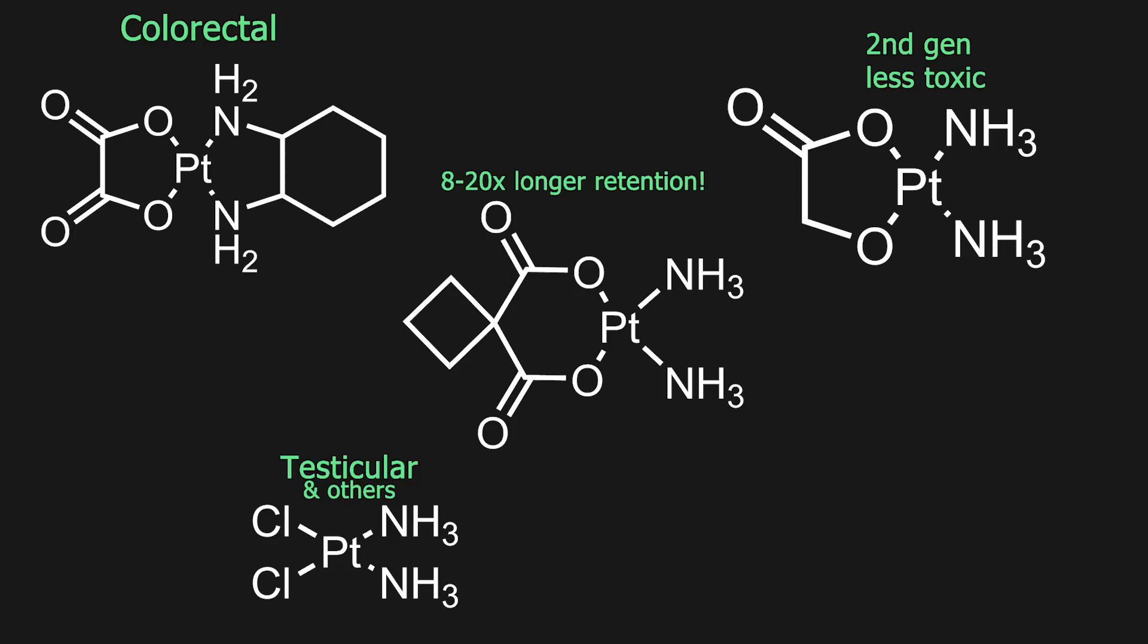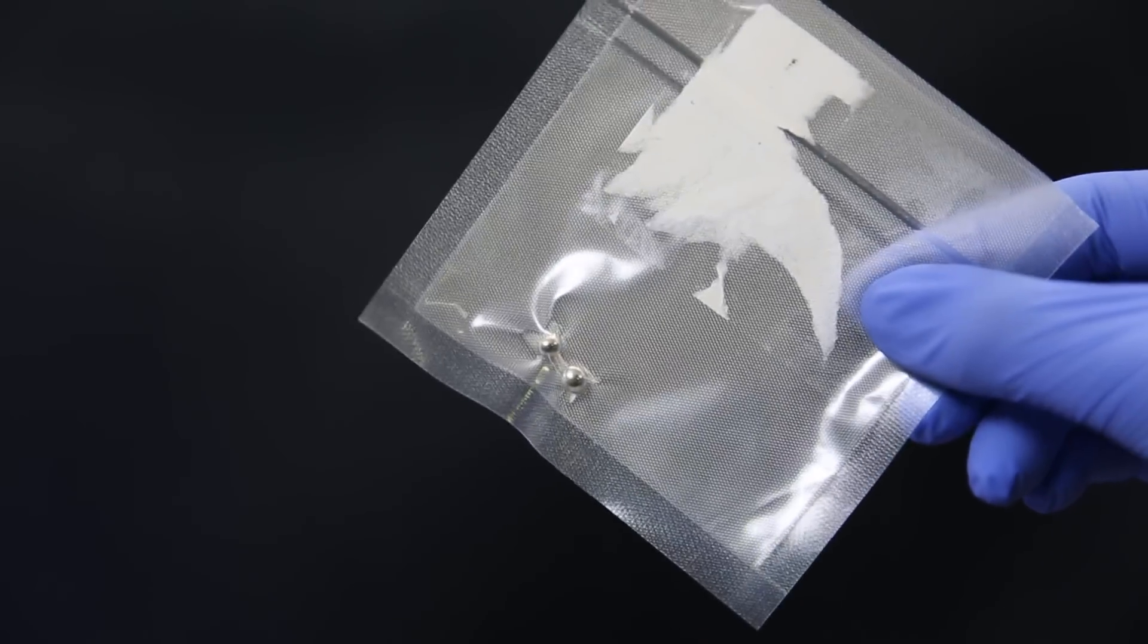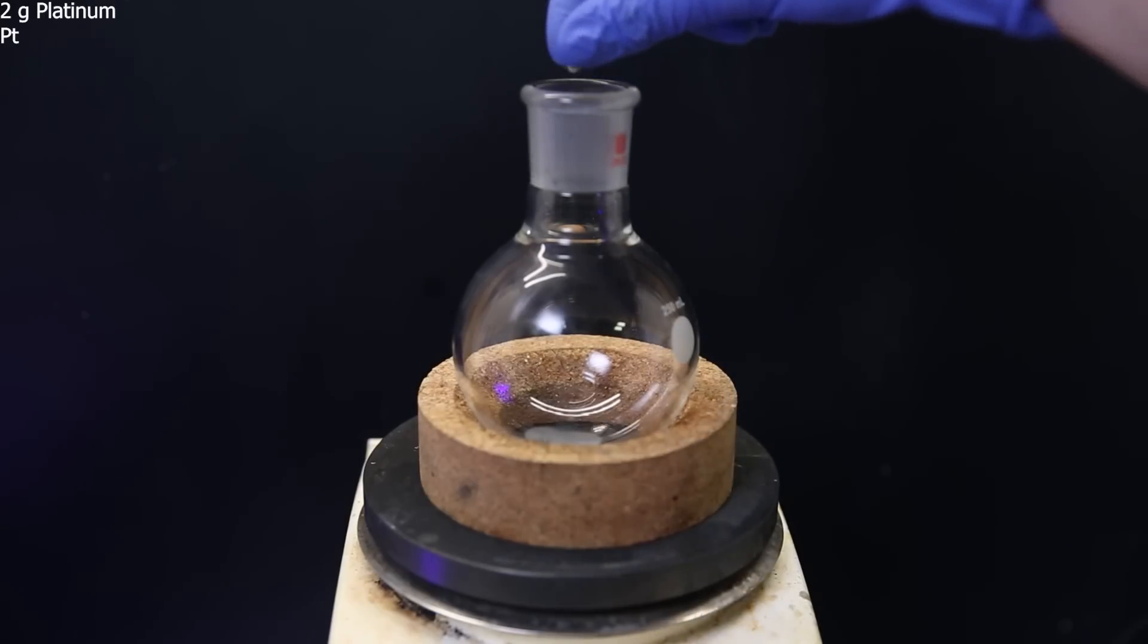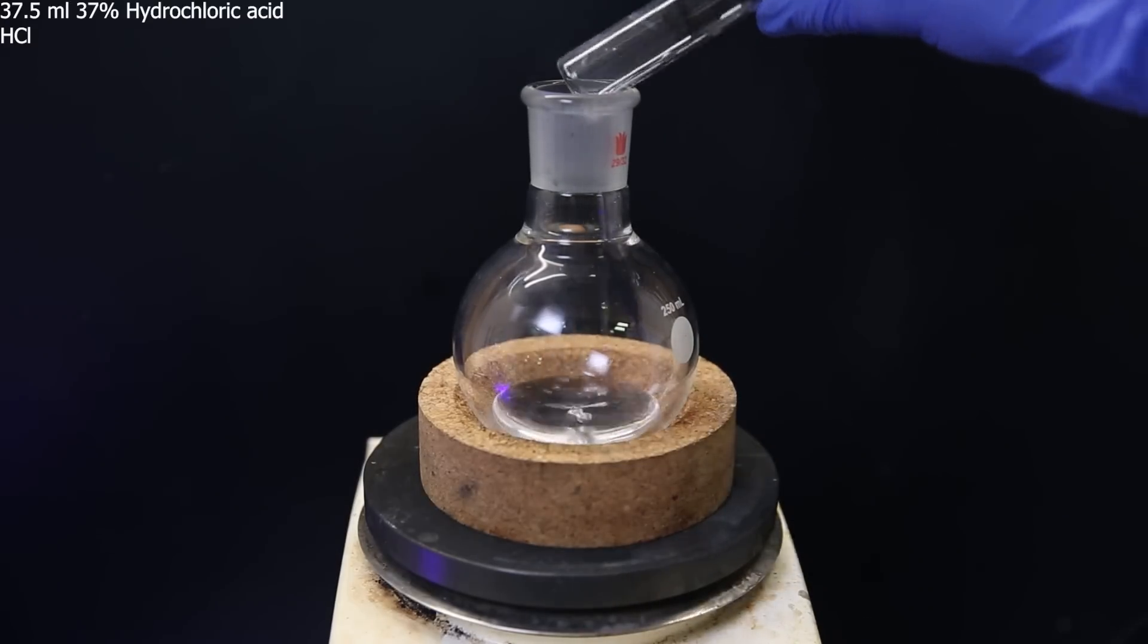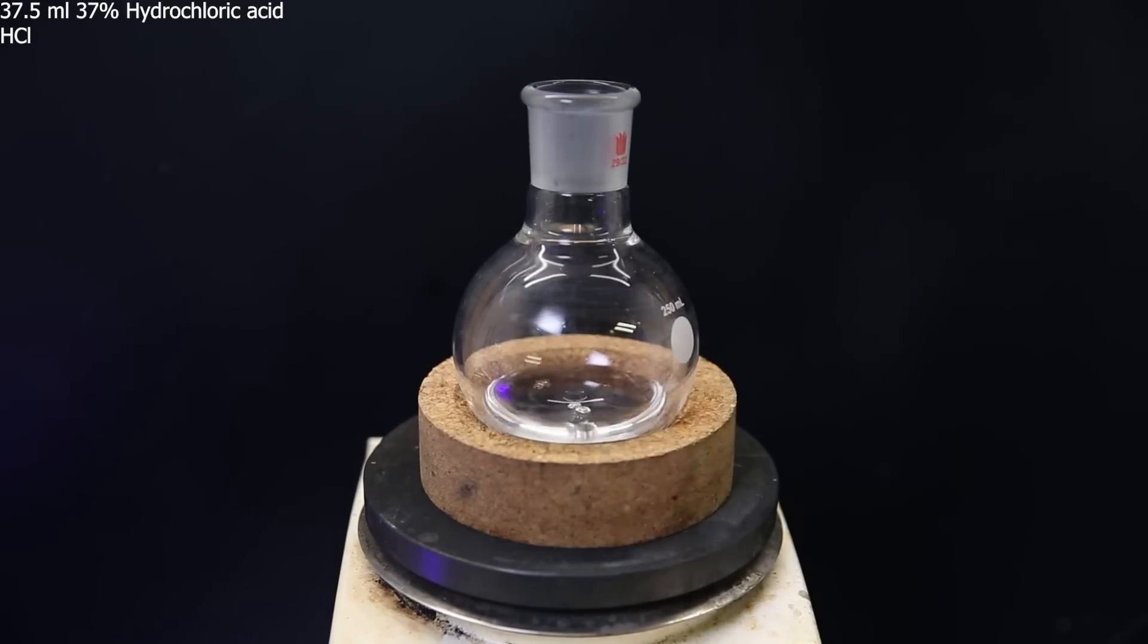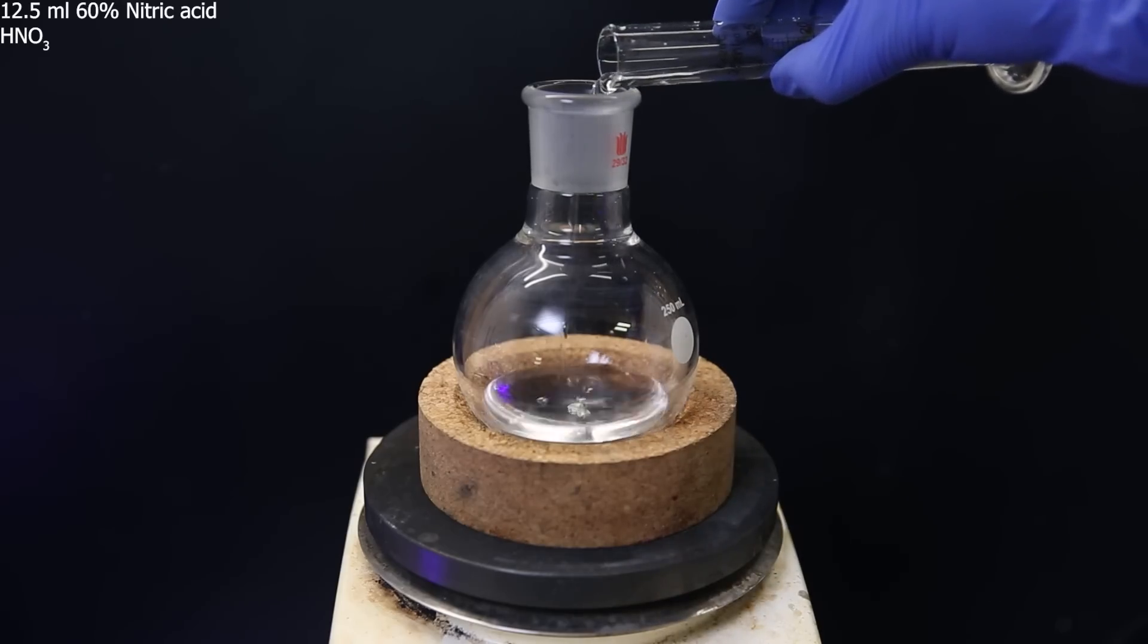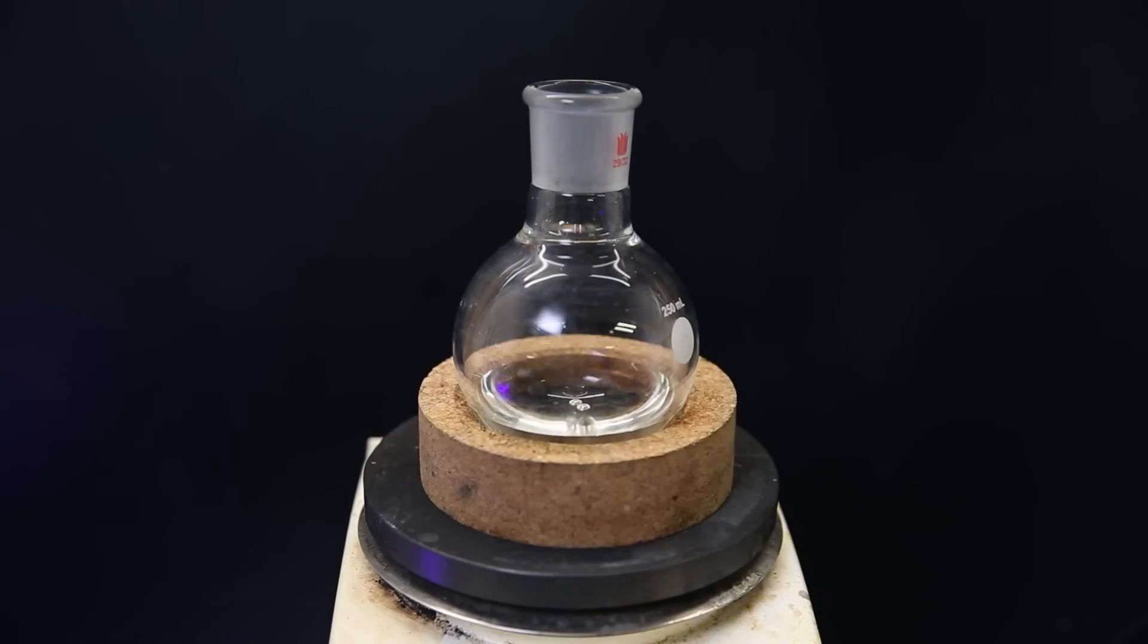Now let's make it, starting from platinum metal. Here I have exactly 2 grams of platinum metal, and it will have to be dissolved first. So I add it to a flask, and on top of that, I add 37.5 mils of 37% hydrochloric acid. Then I add 12.5 mils of 60% nitric acid, which together form aqua regia, which can dissolve noble metals like platinum and turn it into hexachloroplatinic acid.